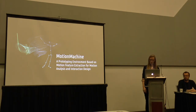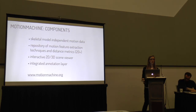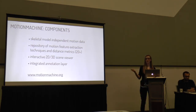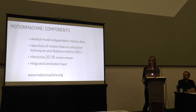This is why we developed MotionMachine, which is an open-source prototyping environment based on motion feature extraction for motion analysis and interaction design. It is a framework which is independent of the skeletal model of the motion data you input — so it can be used for a full skeleton with high-end optical motion capture or coming from a Kinect sensor, or for hand skeleton tracking with Leap Motion, and so on. It contains a repository of motion feature extraction techniques and distance metrics — at the moment there are about 20 of them, and we're working on adding more. And since it's open source, other people can add their own features too.